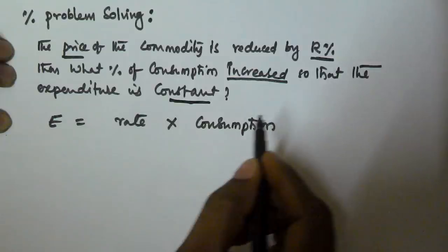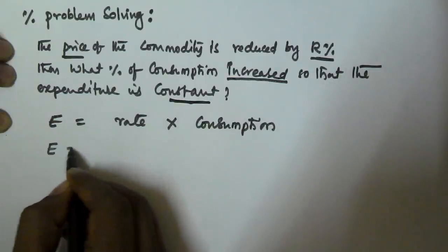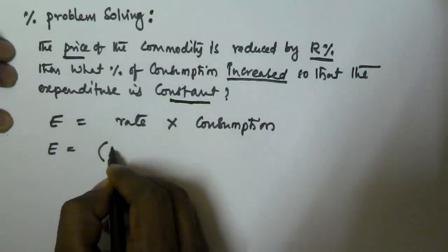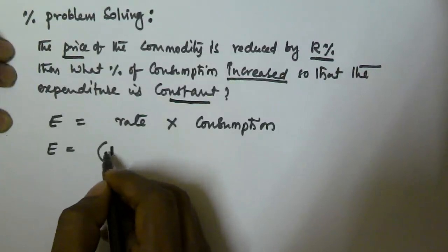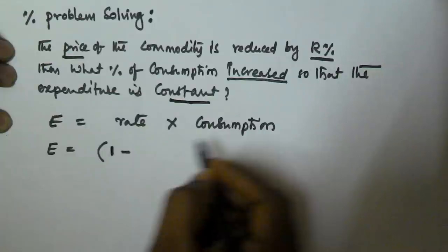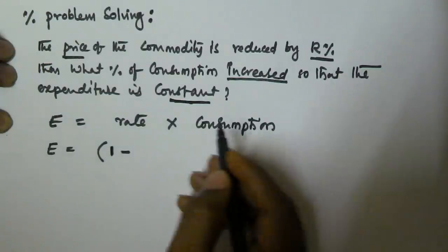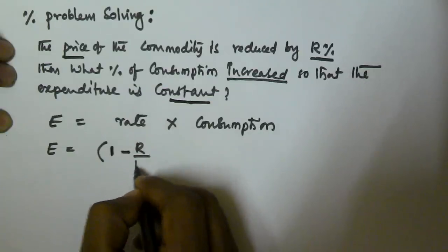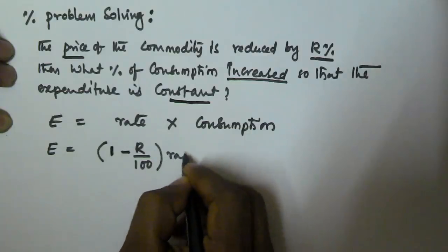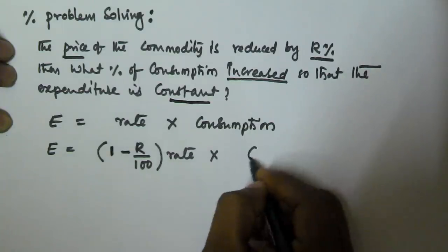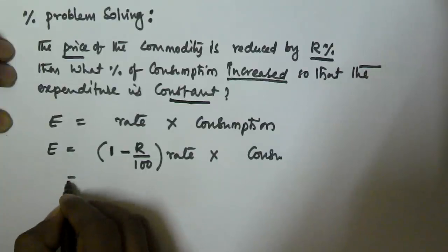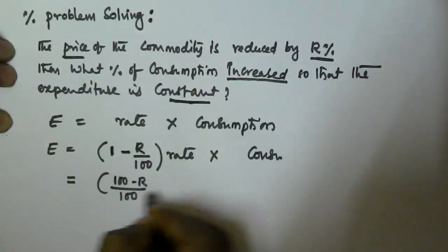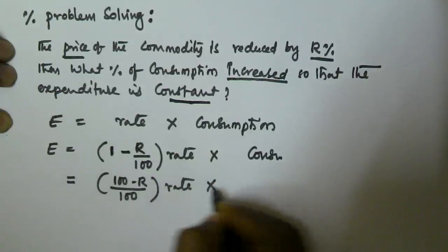Here, the rate is reduced by R%, which is equivalent to the current 100% rate. The fraction equivalent to this reduction is (1 minus R/100) into rate into consumption. So this becomes (100 minus R)/100 into rate into consumption.